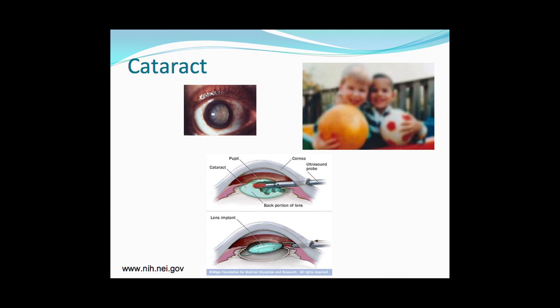Have you ever wondered how someone with eye disease views the world? Let's mimic cataract. It's very simple to do — just take a set of goggles and wrap wax paper around them, then place them on your head. How has that changed your vision?